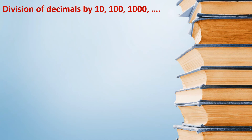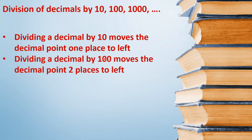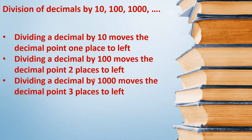Conclusion यह निकला: जब भी हम किसी decimal को 10 से divide करते हैं, तो decimal point one place left की तरफ move कर जाता है. और जब किसी भी decimal number को 100 से divide करते हैं, तो decimal point two places left की तरफ move करता है. और जब हम किसी decimal को 1000 से divide करते हैं, then decimal point three places left की तरफ move करता है.